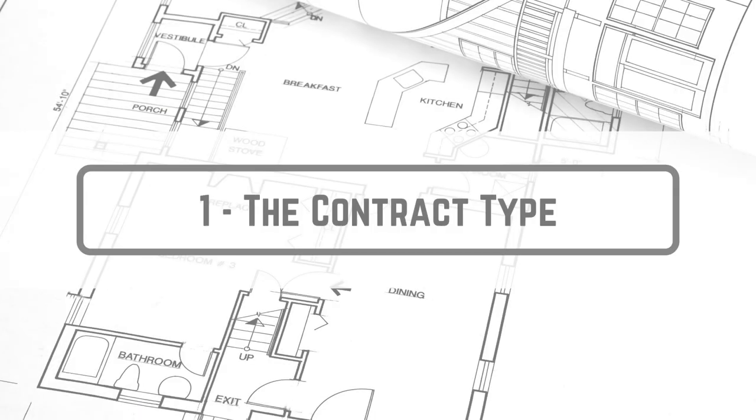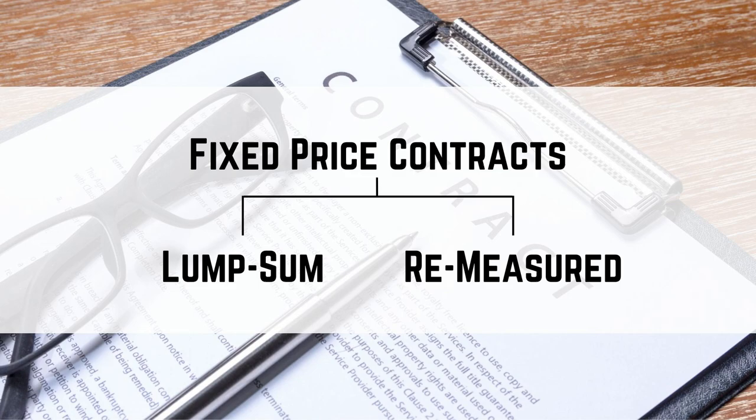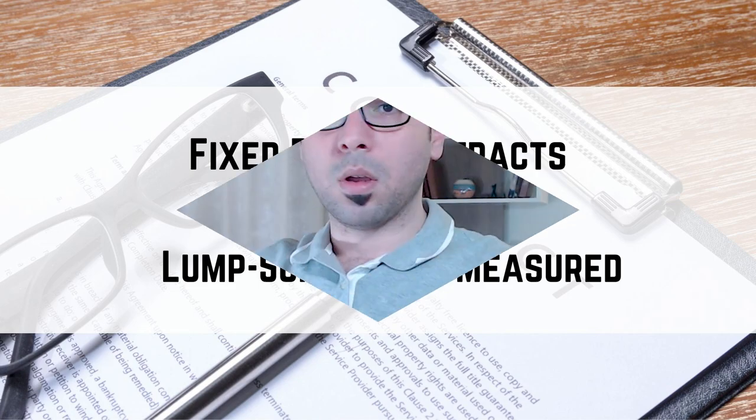In contracts or agreements there will be many clauses, terms and conditions that you need to understand and pay attention to. Starting with term number one, which is the contract type. There are many types of contracts, but the most commonly used type is fixed price contracts.